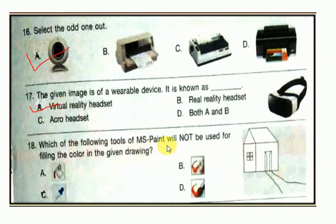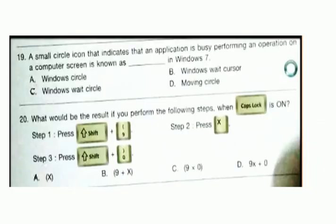Question number 17: which of the following tools in MS Paint will not be used for filling the color in the given drawing? Answer: C. Question number 18: a small circle icon that indicates an application is busy performing an operation on a computer screen is known as — the answer is C, Windows red circle.